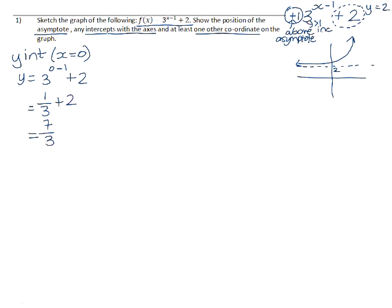So that means that our y-intercept is going to be at 0 and 7 over 3. If we sketch ourselves a set of axes, x and y, the position of our asymptote through positive 2 on the y-axis.